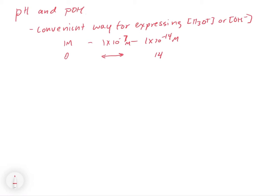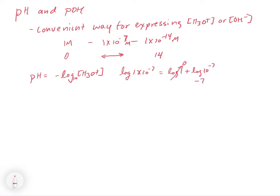When we want to define the pH, the pH is equal to the negative log of the concentration of H₃O⁺. We're using log base 10. If we had 1 times 10 to the minus 7, the log of 1 times 10 to the minus 7 gives us the log of 1 plus the log of 10 to the minus 7. The log of 1 is just 0, and the log of 10 to the minus 7 is minus 7. Since we're taking the negative of the log, the negative of negative 7 gives us 7.